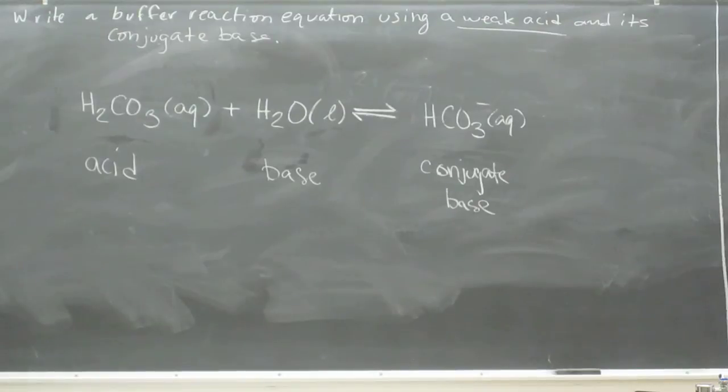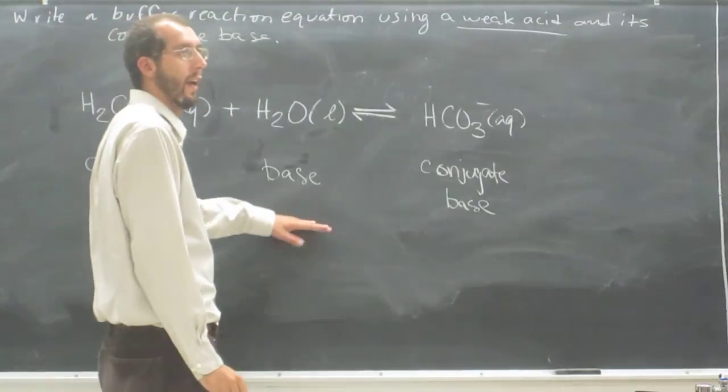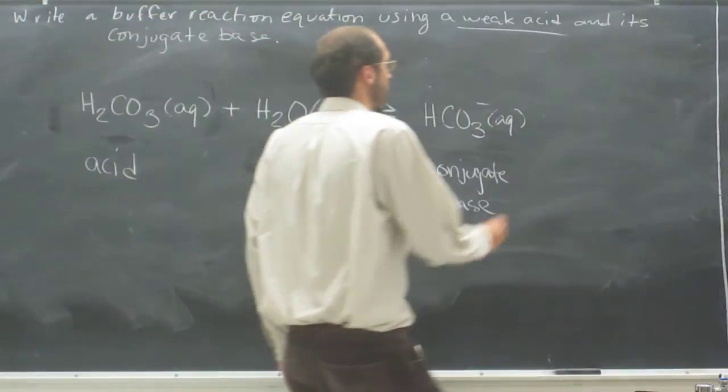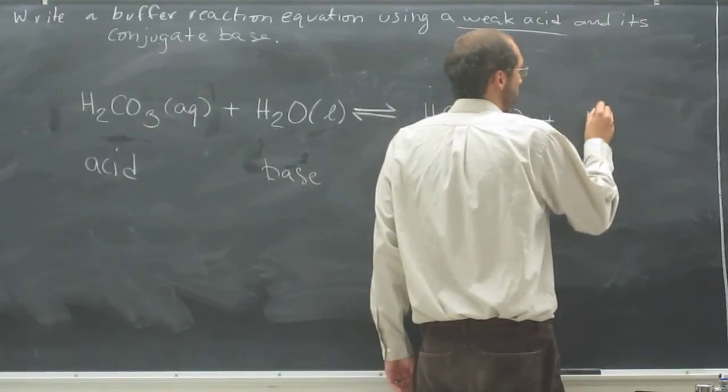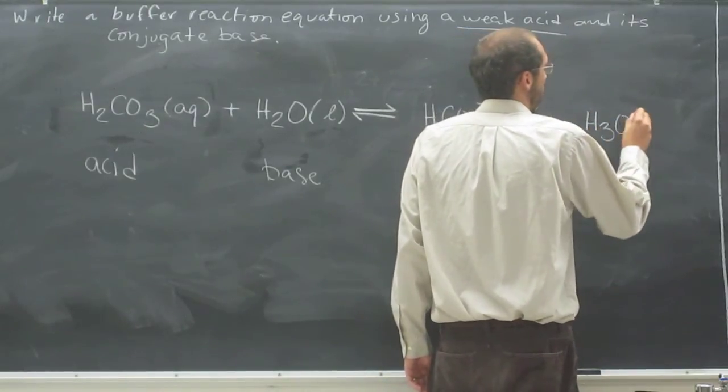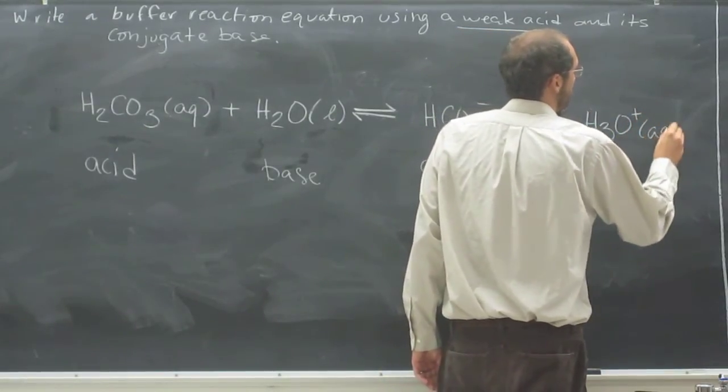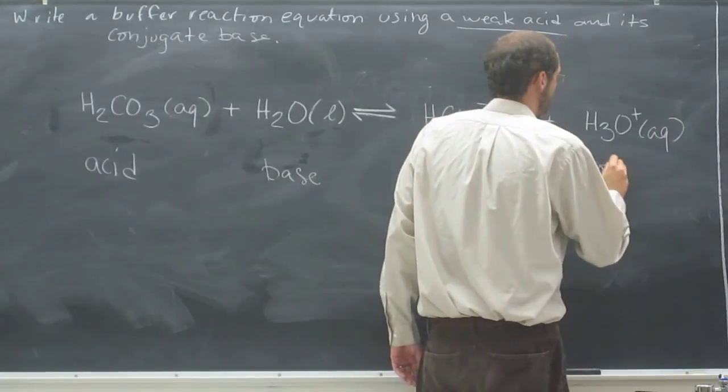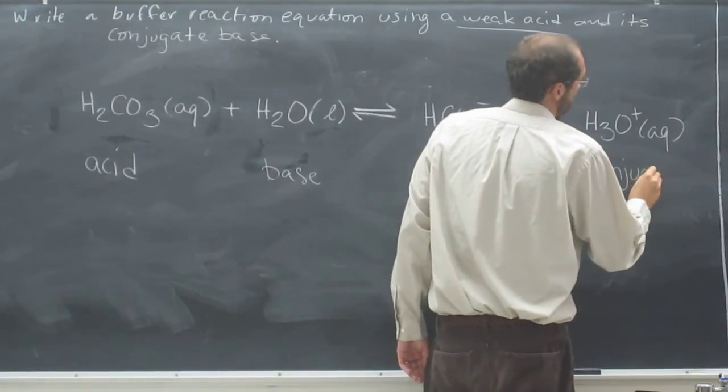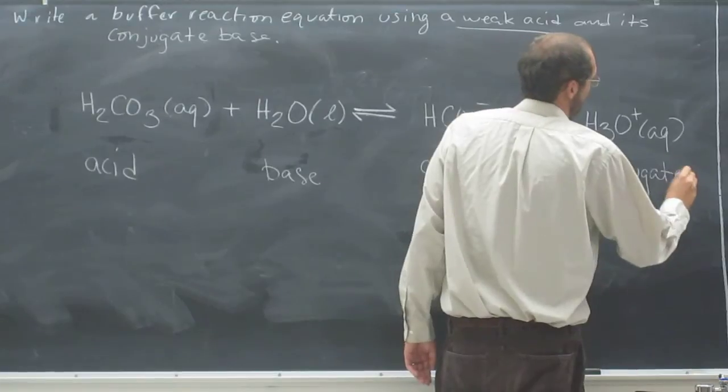And then, of course, you're going to have to write the conjugate acid of your base, which is just the hydronium ion. H3O plus aqueous. That's your conjugate acid.